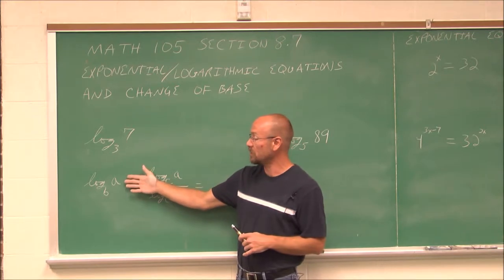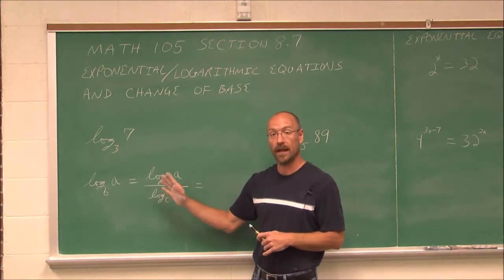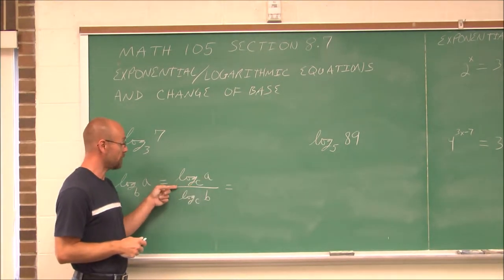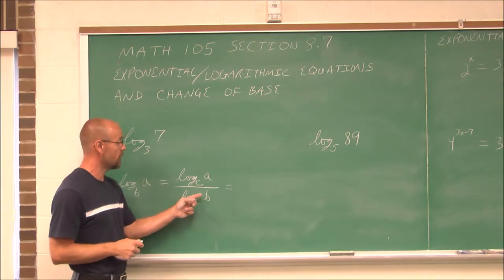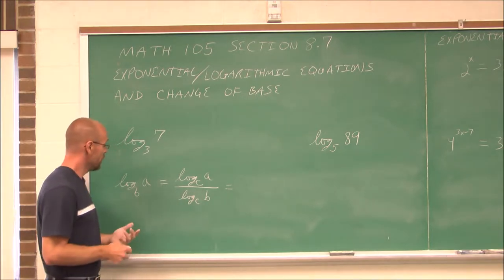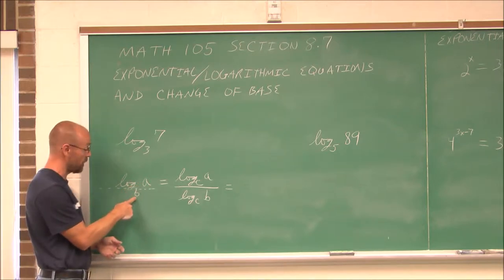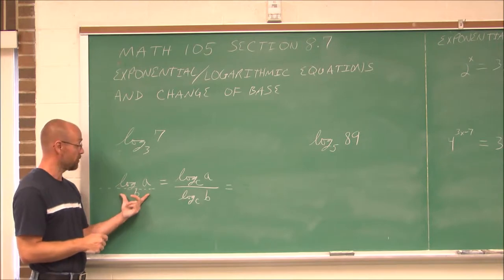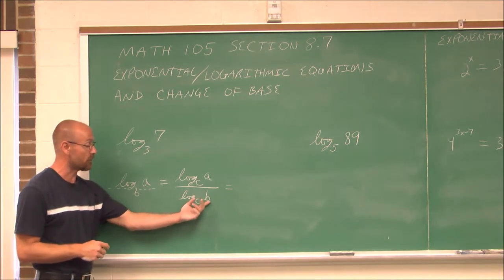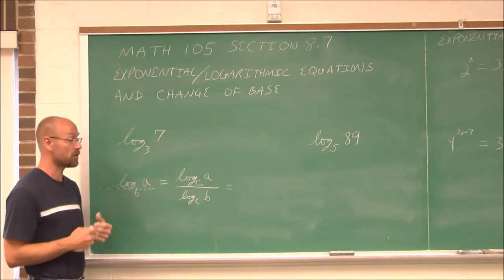This is essentially the change of base formula. If we have the log of some base b of some argument a, we can change its base to anything we want by saying log base c of the argument divided by log base c of the base, where c is just any other number I choose, as long as the bases match top and bottom. To avoid confusing argument with base, draw a line across your logarithm — the base goes below that line.